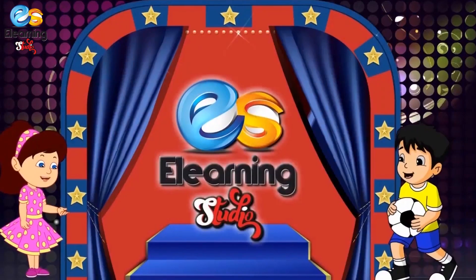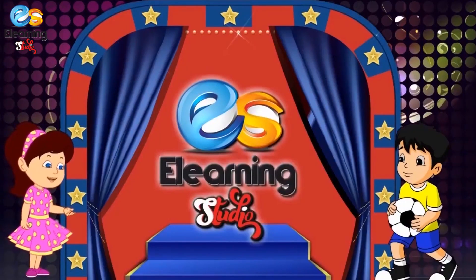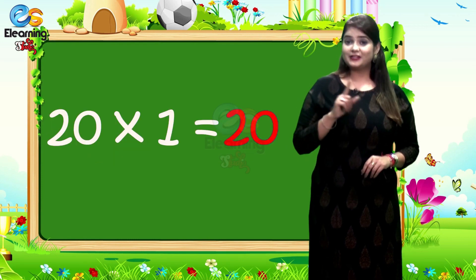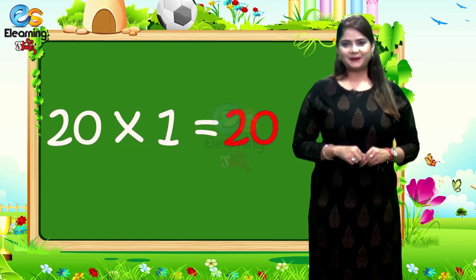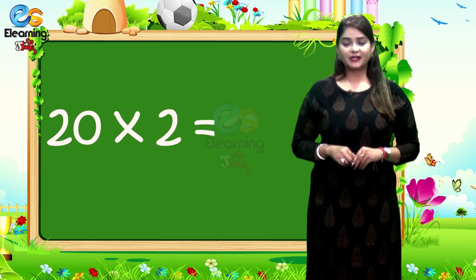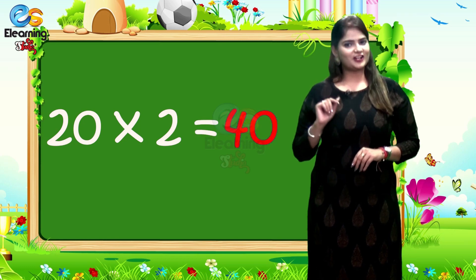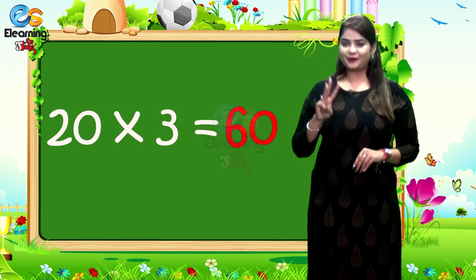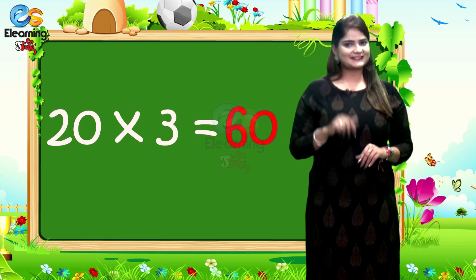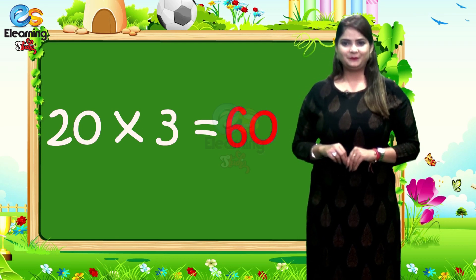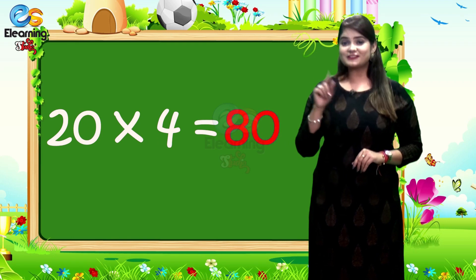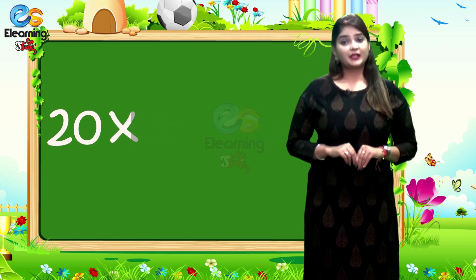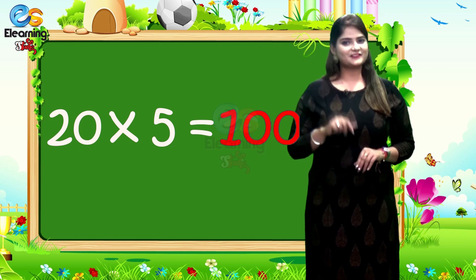E-Learning Studio. Table of 20. 20 times 1 is 20. 20 times 2 is 40. 20 times 3 is 60. 20 times 4 is 80. 20 times 5 is 100.